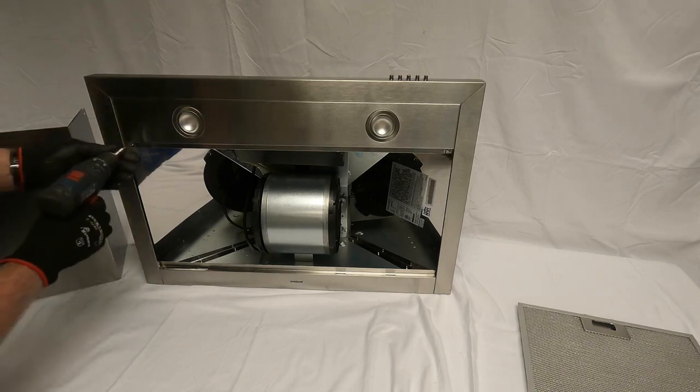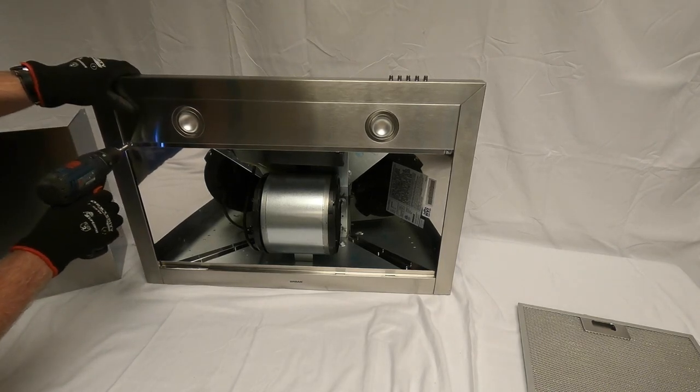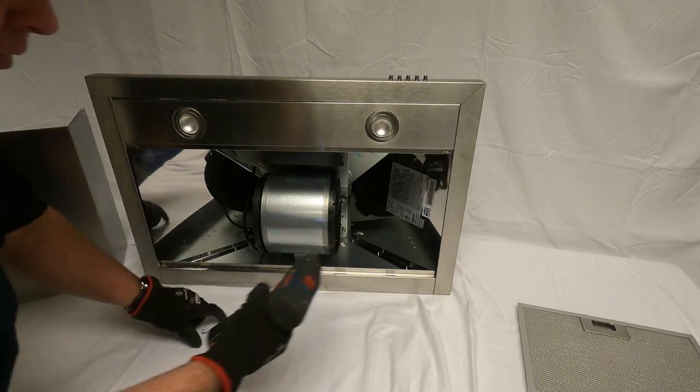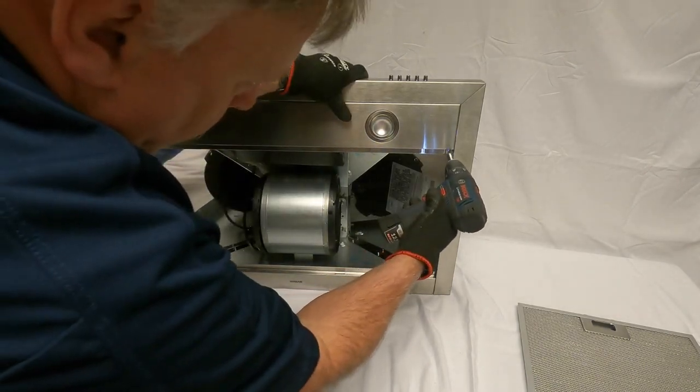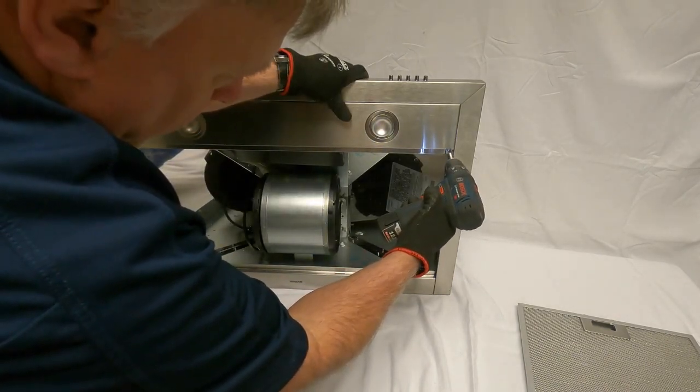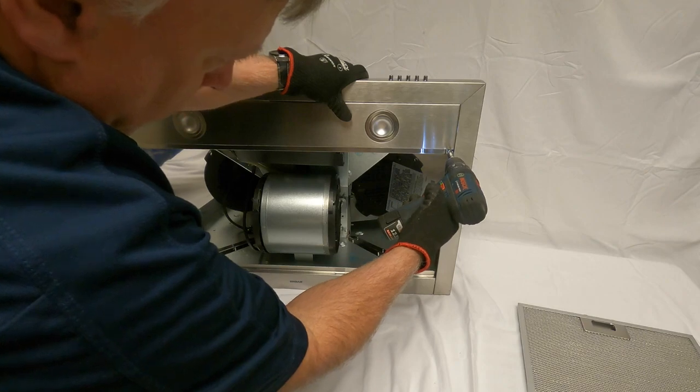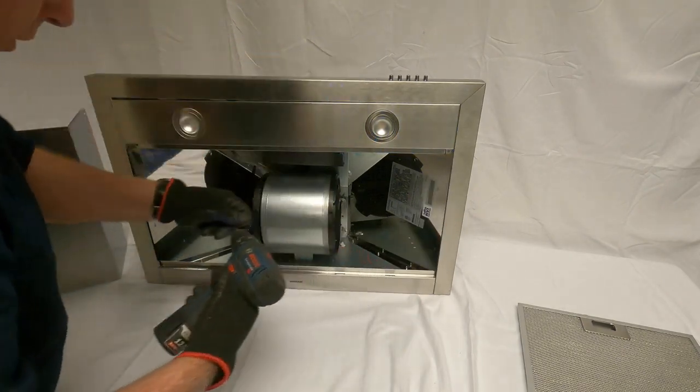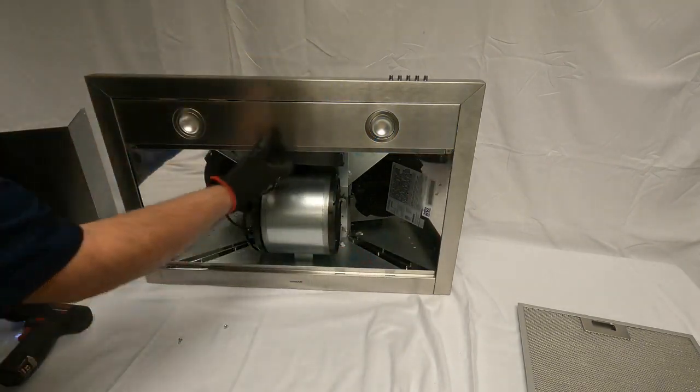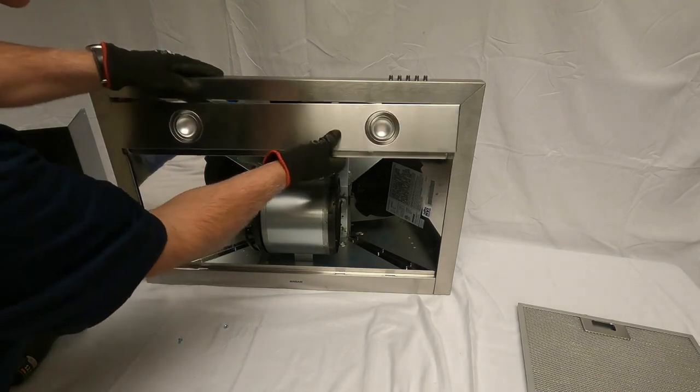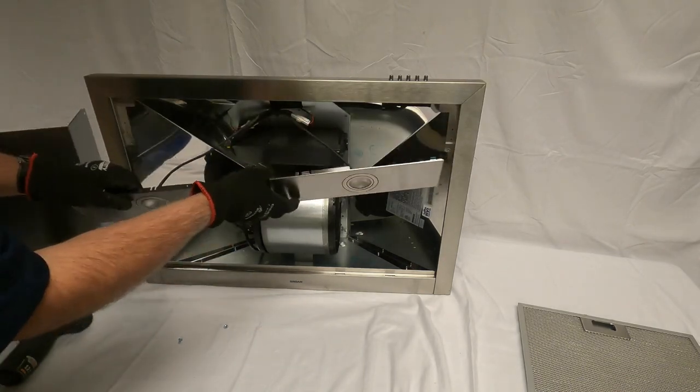Once those screws are removed, just grab onto the light assembly and you can pull down.